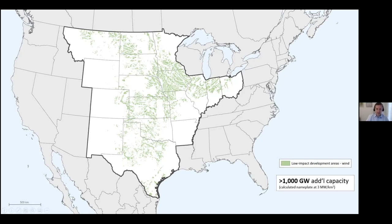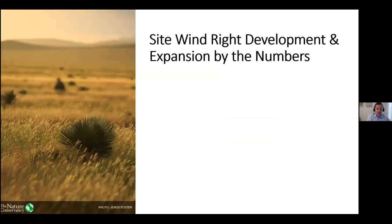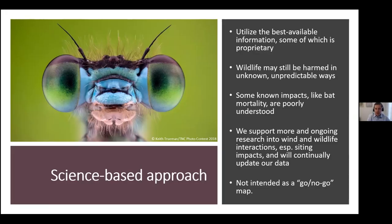This is a science-based approach — we utilized the best available information, though some of it is proprietary. We often get questions about why we provide just one layer of map rather than each individual data layer, and that's because some data is very sensitive and not shared at a point location. Regardless of what we know, wildlife will still be harmed in unknown and unpredictable ways. We're not saying this is a catch-all approach — it's based on the best available science about where the risk is that we know today. Some impacts, especially bat mortality, are still poorly understood, and until we know more, it's imperative we take a conservative approach.